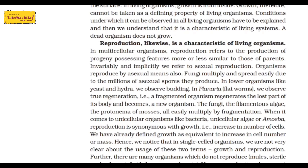There are different methods of asexual reproduction. Like fungi multiply and spread easily, or millions of asexual spores are produced. Yeast and hydra use budding, regeneration, and fragmentation. Bacteria use fission and binary fission. Plasmodium also reproduces asexually. All these different methods of asexual reproduction are seen in unicellular organisms as well.